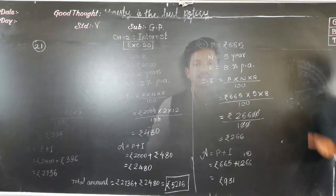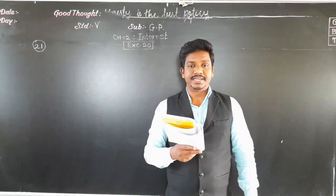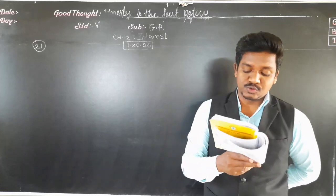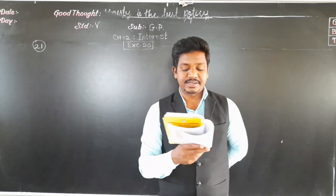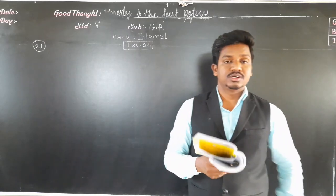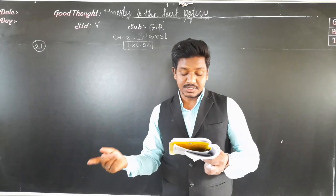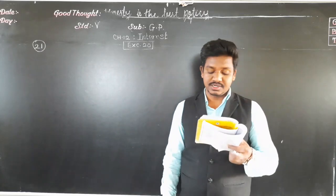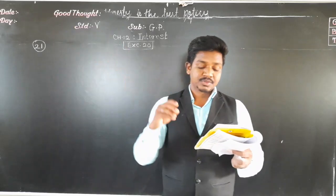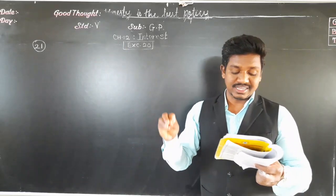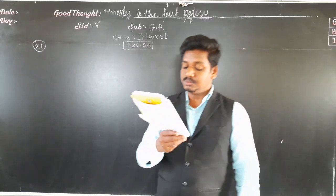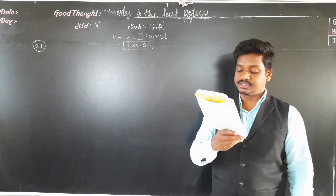Pause this video and write both examples in your notebook. Next example: Atul kept a deposit of rupees 1250 in a bank at 11% rate for 2 years. Vikas kept a deposit of rupees 1100 in HDFC bank for 2 years at a rate of 12%.